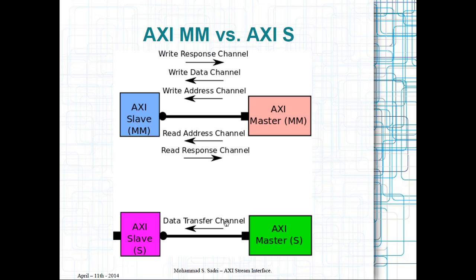If we compare one AXI memory mapped interface with one AXI stream interface: in memory mapped mode, with one AXI master and one AXI slave component, there are five channels between them — three channels for write transactions and two channels for read transactions. I have already talked about these channels previously.